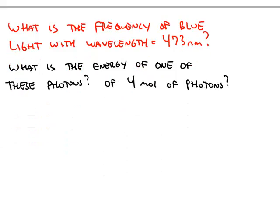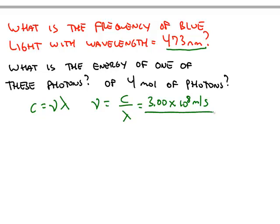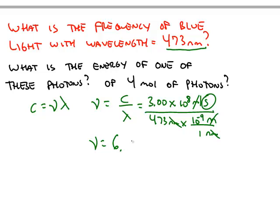A typical problem will ask something like: what is the frequency of blue light if the wavelength is 473 nanometers? Frequency and wavelength are related by the speed formula. Solving for frequency gives speed divided by wavelength — 3 times 10 to the 8th meters per second divided by 473 nanometers, with units converted to meters to cancel. The meters cancel, and we're left with inverse seconds, giving 6.34 times 10 to the 14th hertz.